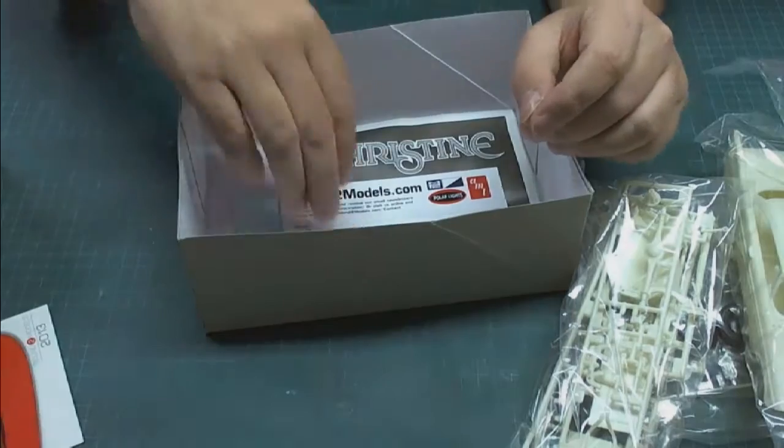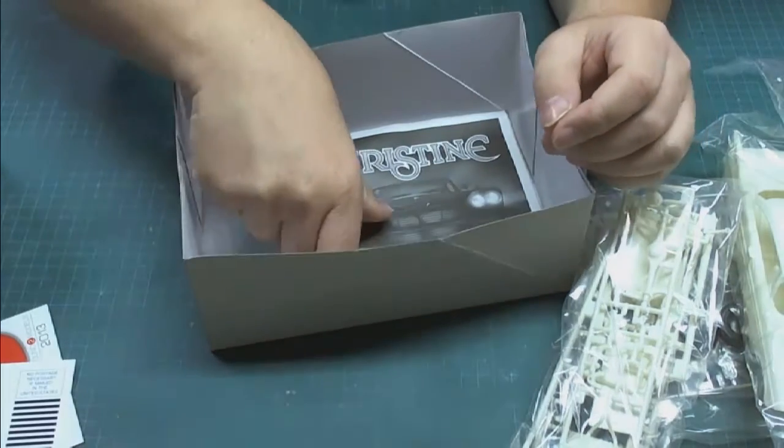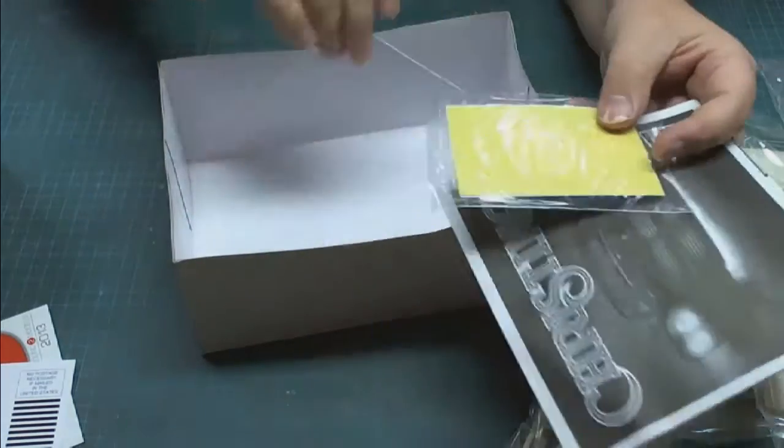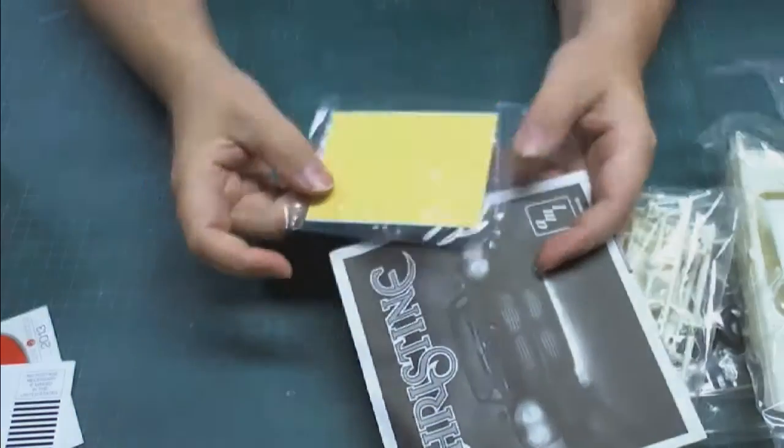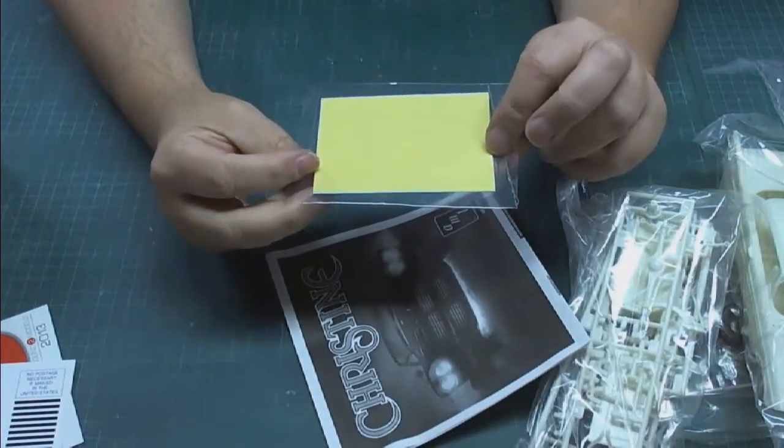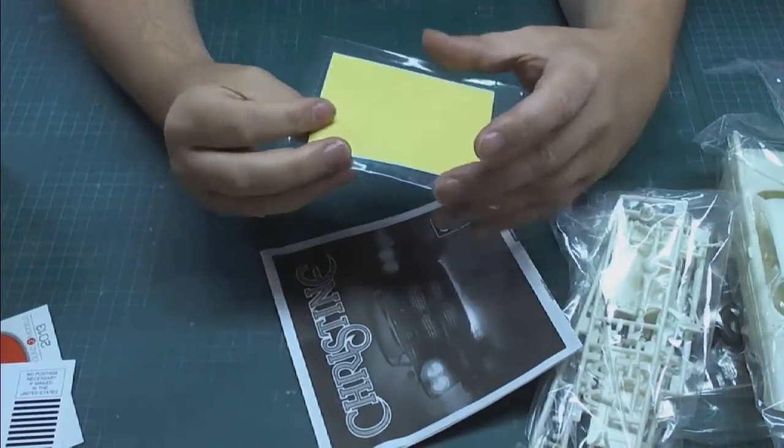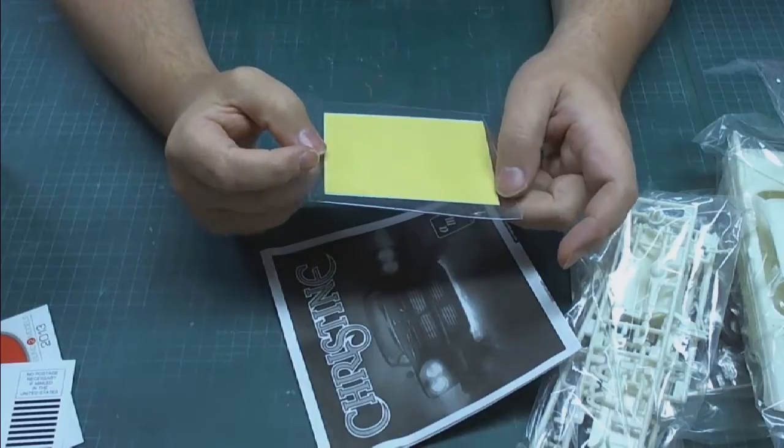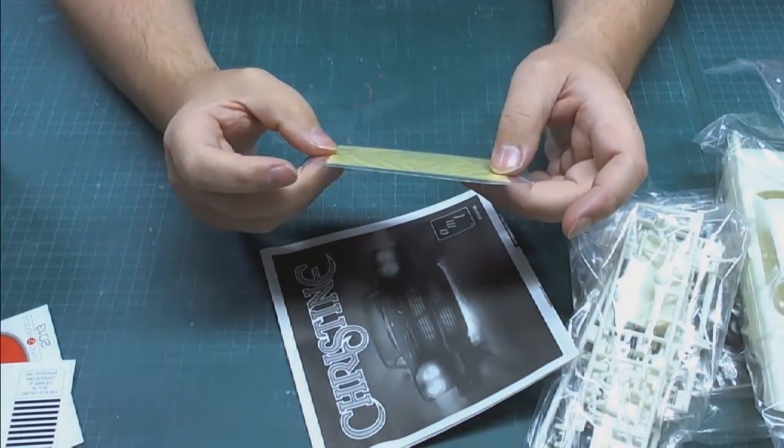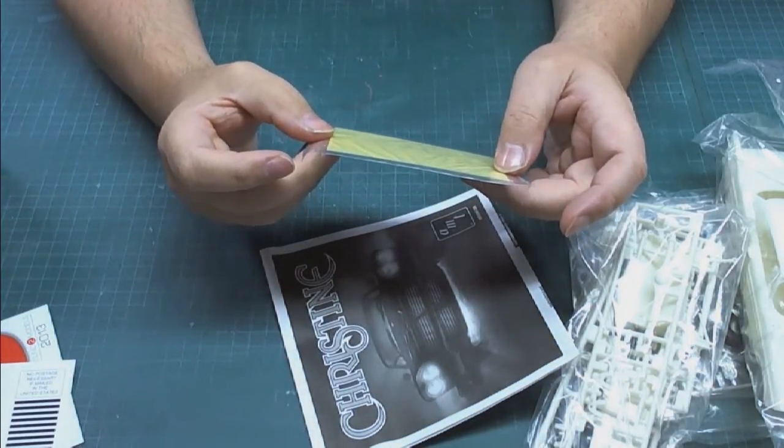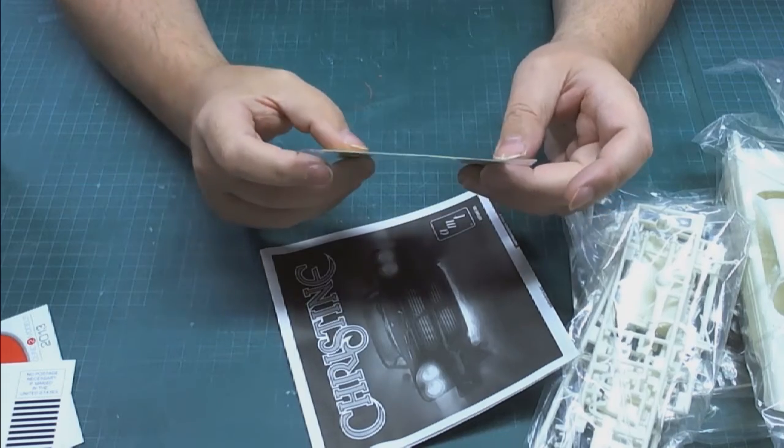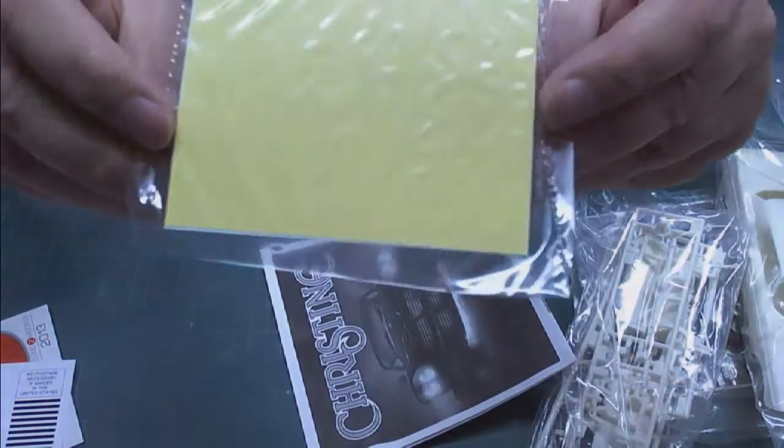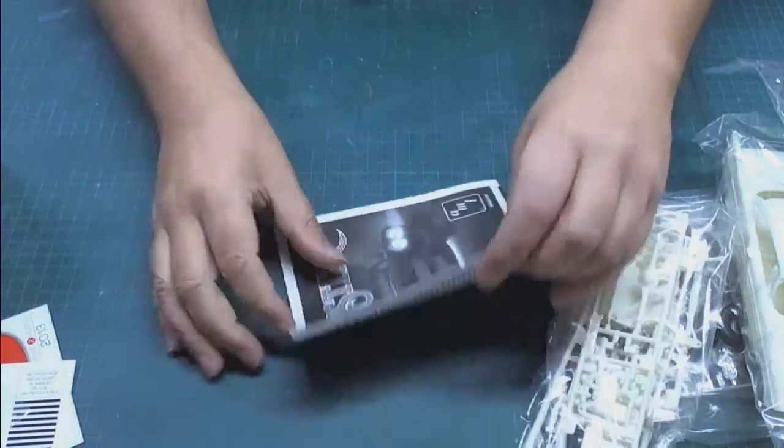We get the usual Round Two paraphernalia. Let's have a look at the decals. Decals are always done very nice. I'm not going to open this up just yet, but it's a very small decal sheet. Looks like there's a lot of Christine nameplates on it, Darnell's Tonight is on there, so there's a lot of stuff on the decal sheet.